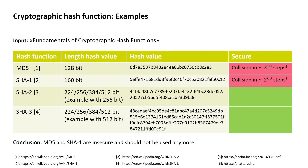For SHA-1, released in 1995, it was rumored from the early 2000s that collisions may be found one day. Indeed, back in 2017, researchers at Google fabricated a pair of PDFs that are clearly very different but have the same SHA-1 hash value, breaking the collision-resistance property for SHA-1. The fabrication of these two PDFs took roughly 2 to the power of 60 evaluations of SHA-1, again significantly lower than expected, rendering SHA-1 also insecure for integrity-related cryptographic purposes.